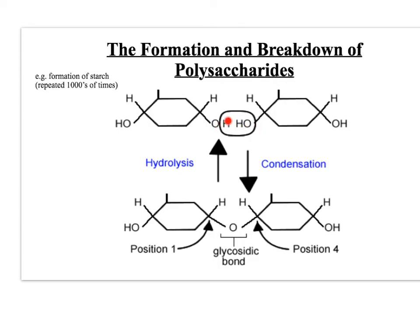The oxygen attached to the hydrogen in the hydroxyl group — the bond breaks there, leaving a free bond on the oxygen to join up with the free bond on the adjacent monosaccharide. They join together, and that's known as a glycosidic bond — the linker that joins the monosaccharides together.